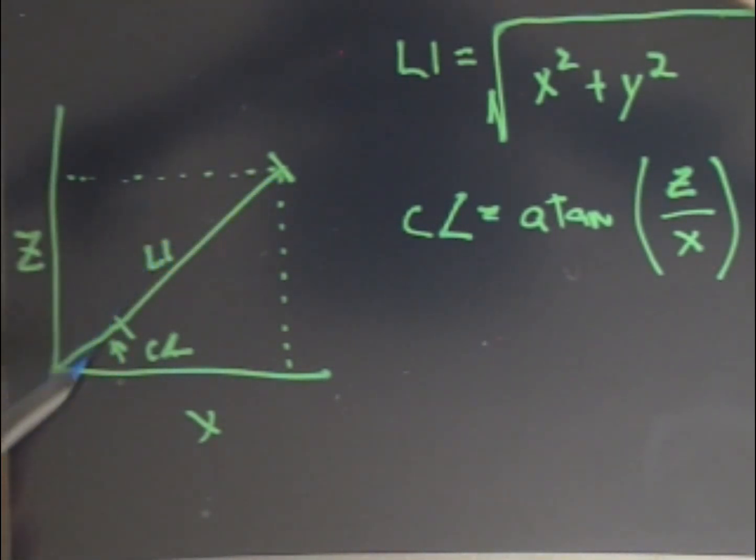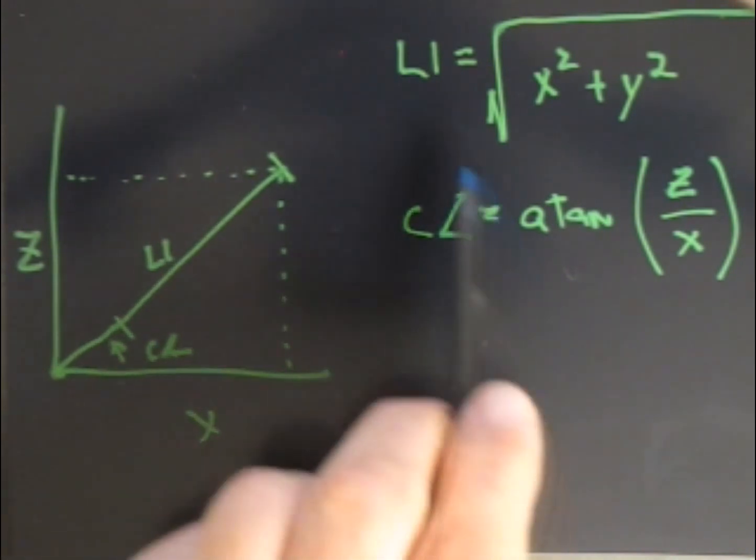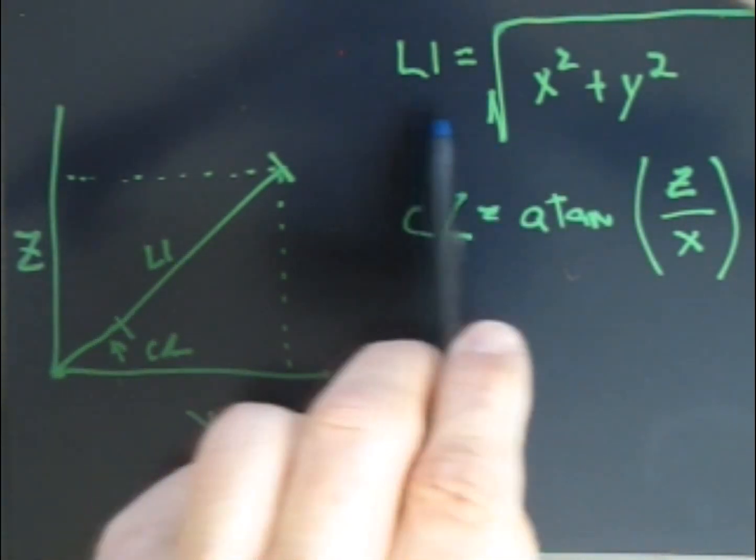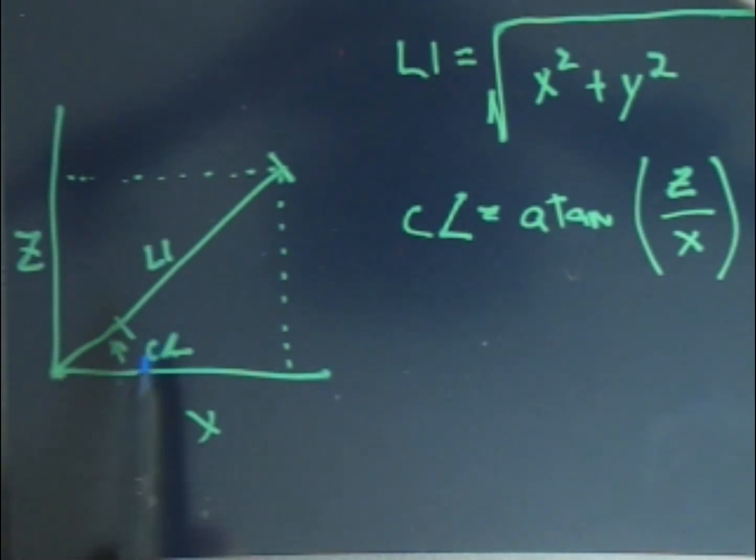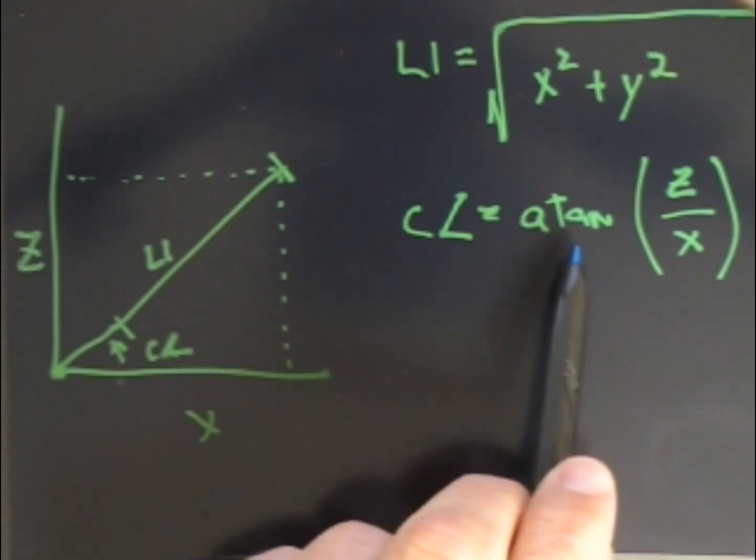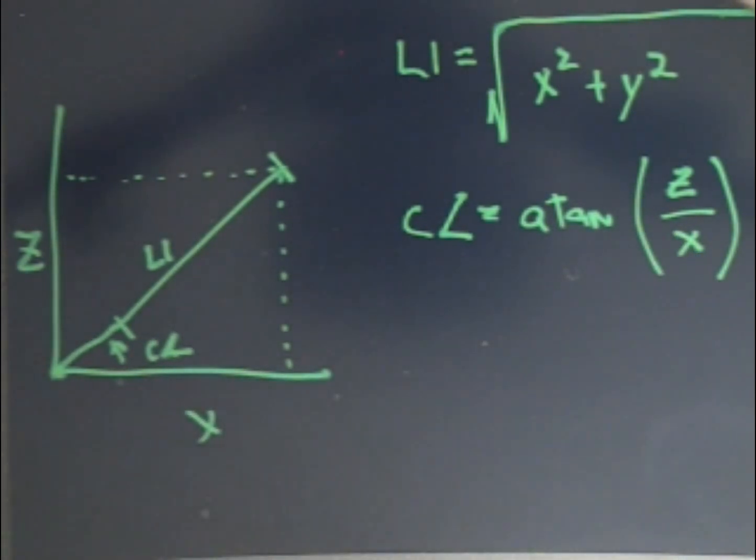This length I'm going to call L1. To calculate this L1, it's simply this right triangle, which comes out to X squared plus Z squared and taking the square root gives me the L1 value. To calculate the angle, the coxa angle is equal to the arc tangent of Z divided by X. Very simple on this particular equation.